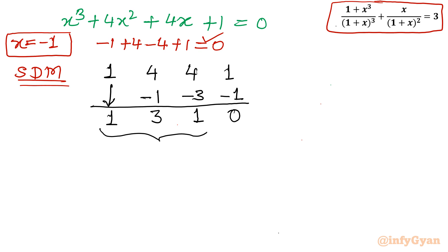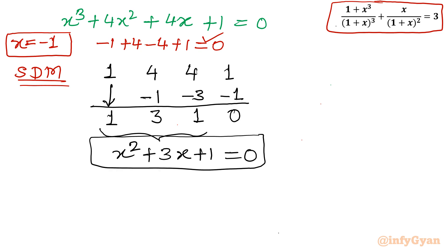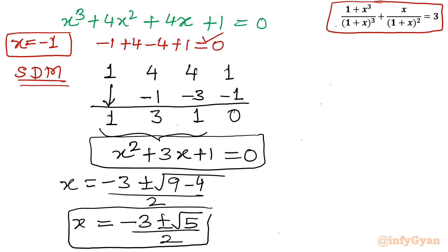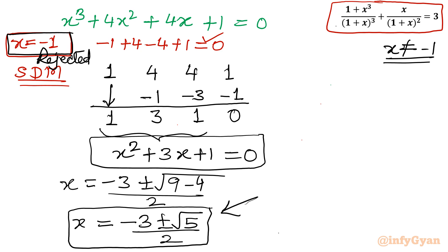This quadratic is the same as the one from Method 1. Applying the quadratic formula gives x = (−3 ± √5) / 2. The solution x = −1 is rejected because it is in our excluded domain (x ≠ −1). So the final solution is x = (−3 ± √5) / 2.